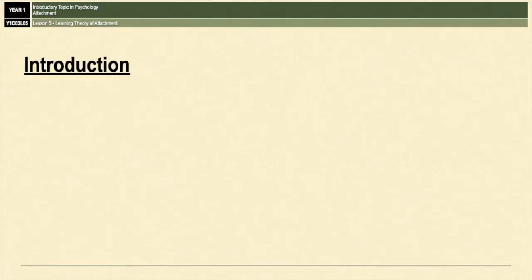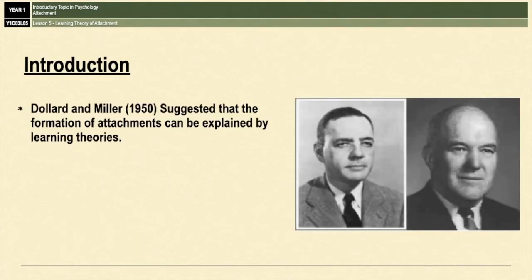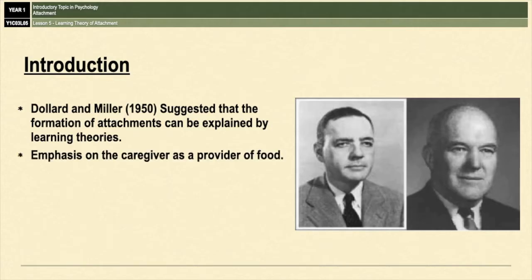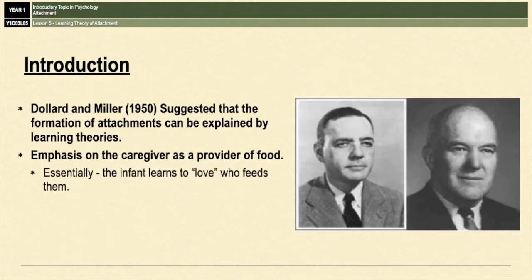The learning theory of attachment was put forward by Dollard and Miller in 1950 and the approach centers around the importance of food. Essentially the approach suggests that infants learn to love whoever feeds them, and because of that it's been described as what's known as a cupboard love approach. The baby is effectively faking attachment in order to get food.